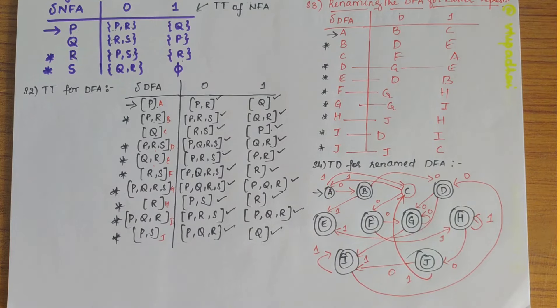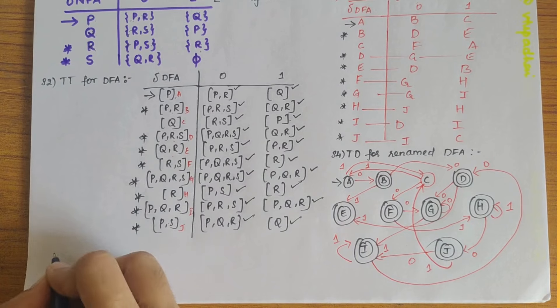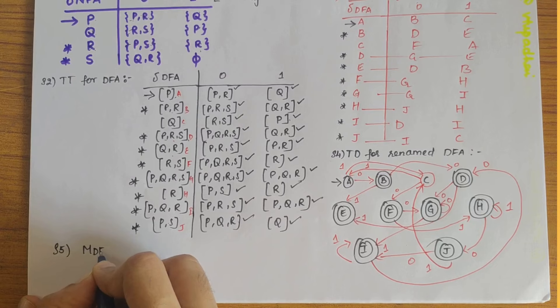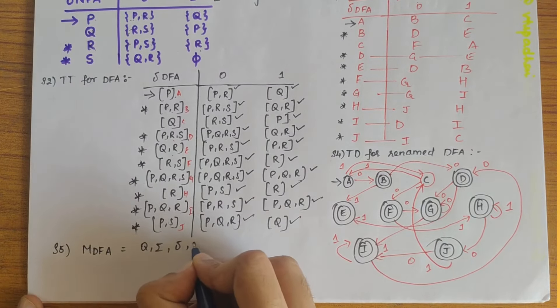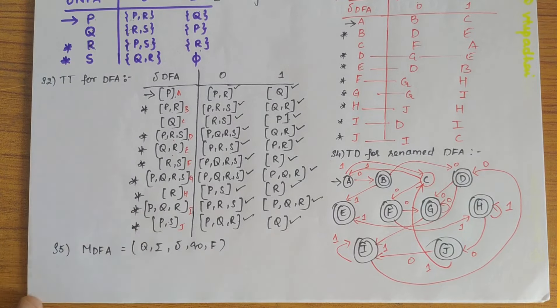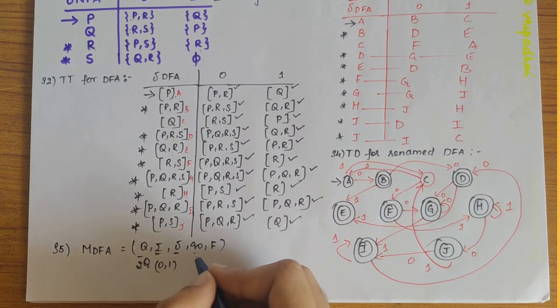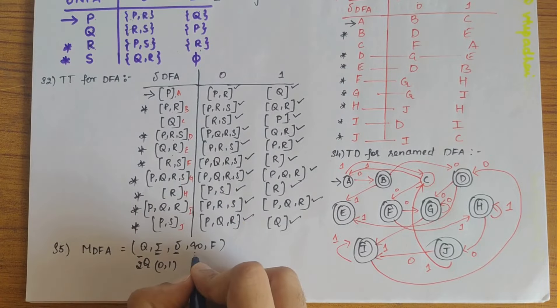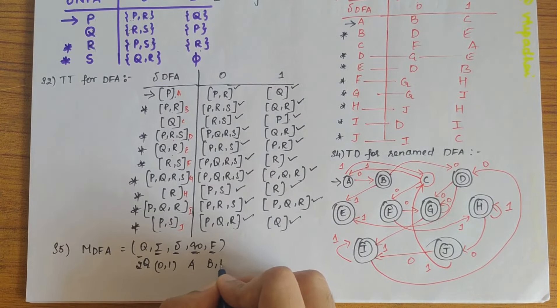Our next step would be to define the M values. So let's write it here. Step 5 as M DFA is equal to Q, sigma, transition function Q0 and F. So Q can be the 2 power Q states. Sigma is 0,1 as we know. Transition function is, all the transition states are being defined in step 2 here, and Q0 being the start state A, and F being the final state, wherever the star, all those come under F.